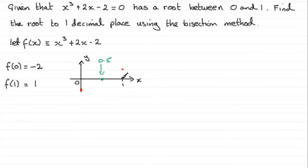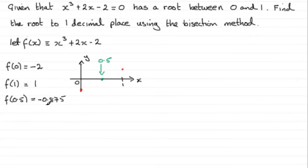We now have to establish which part of this interval the curve passes through by checking for a change in sign. We work out f of 0.5 — substituting 0.5 into the equation — and we find it equals minus 0.875, a negative value. So at 0.5 the curve is below the x-axis, meaning it must cross somewhere between 0.5 and 1. We now need to consider this interval and cut it in half.